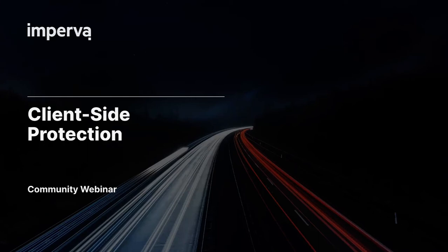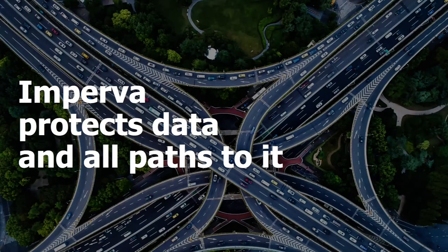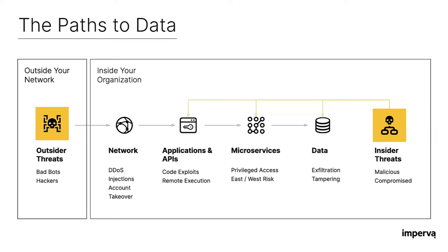Just to put it into context, under Imperva's premise of protecting data and all the paths to it, this solution fits that philosophy. We have various threats from outsider threats, automation, bots, and hackers trying to get into the network, and then insider threats. Client-Side Protection sits in the browser, on the user's actual desktop — it's a client-side issue being exploited, which is different from where the WAF or other solutions sit.